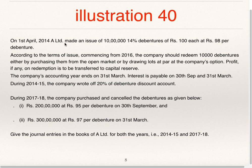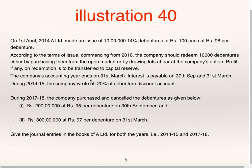On 1st April 2014, A Limited made an issue of 10 lakhs, 14% debentures of rupees 100 each at rupees 98 per debenture — debentures are issued at a discount of rupees 2. According to the terms of issue, commencing from 2016, the company should redeem 10,000 debentures either by purchasing from the open market or by drawing lots at par, at the company's option. Profit if any on redemption is to be transferred to capital reserve. The company's accounting year ends on 31st March, and interest is payable on 30th September and 31st March.